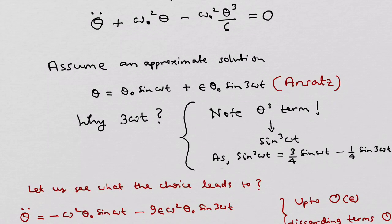Assume an approximate solution θ = θ₀ sin ωt + ε θ₀ sin 3ωt. Here we are using the method of ansatz, which is a method which involves a wise guess. So why do we use a 3ωt term here within the sin? Note that we have a θ³ term in the differential equation. That means we need to account for a sin³ωt term.